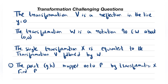Hi guys, in this lesson I'll be doing two challenging questions where majority of students got stuck. The transformation V is a reflection in the line y = 0, which is the x-axis. When it's the x-axis, x,y becomes x,-y. Can you recall that?